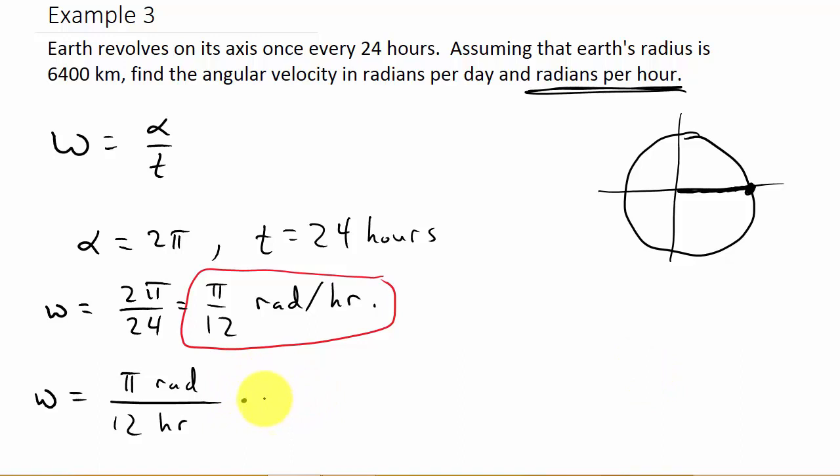What do we need on the bottom in the denominator? We need days. So what do we know? We know in one day there is 24 hours. So what that does is that cancels the hours for us, and that leaves us with radians per day.